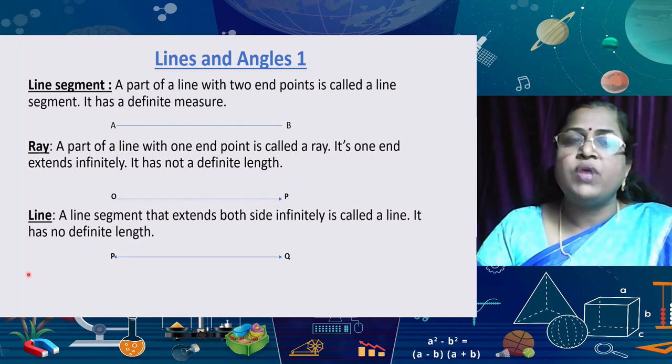Already we have studied about Lines and Angles in 7th class. From 5th onwards, you have already studied about lines, line segments, rays, and angles — different types of angles. So today I am revisiting what you have already studied.